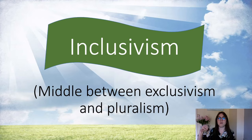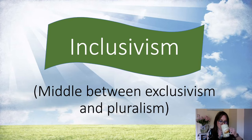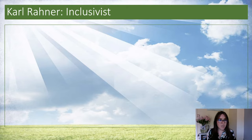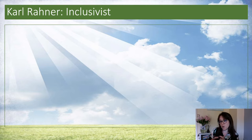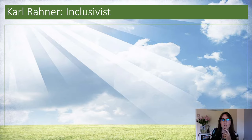Inclusivism is the middle ground between the two arguments. Karl Rahner is our inclusivist. You might remember Rahner from earlier topics including Person of Jesus, where he describes Jesus like an onion — human nature on the outside and the inner layers are the divine parts of Jesus. Same guy, Rahner the onion guy — he is our inclusivist.